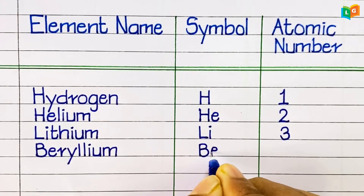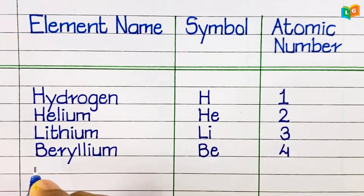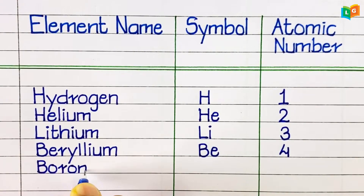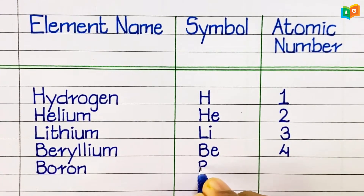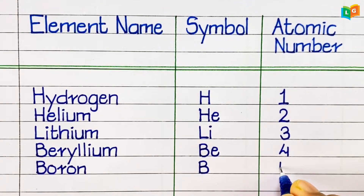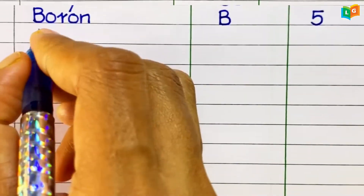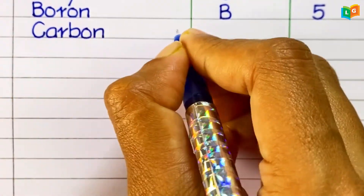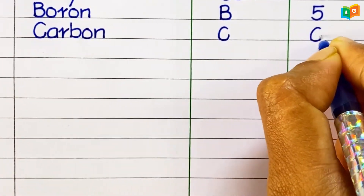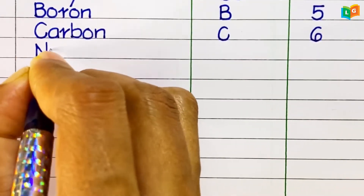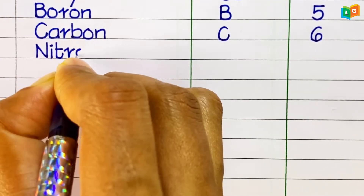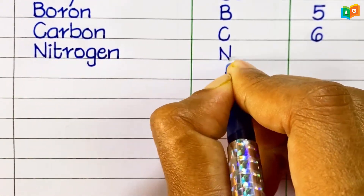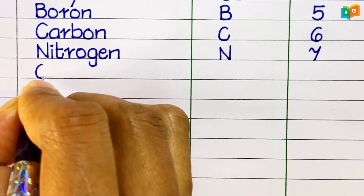Beryllium, symbol is Be, atomic number 4. Boron, symbol B, atomic number 5. Carbon, symbol is C, atomic number 6. Nitrogen, symbol N, atomic number 7.